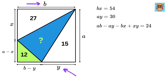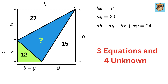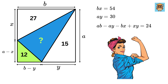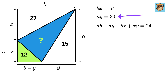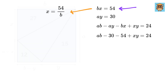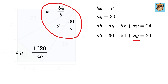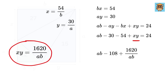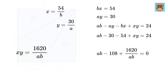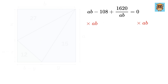Here's the thing — as I said in the beginning, we have three equations but four unknowns, which is normally impossible to solve. But we will solve it. We know ay equals 30 and bx equals 54. Substituting, x equals 54 over b and y equals 30 over a, so xy equals 1620 over ab. The equation becomes ab minus 108 plus 1620 over ab equals 24. Multiplying through by ab gives: ab squared minus 108 times ab plus 1620 equals 0.